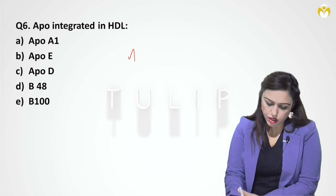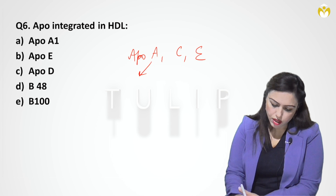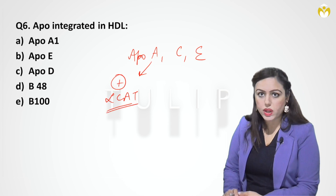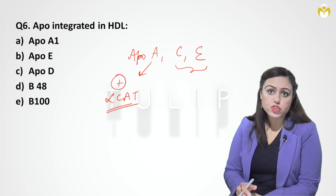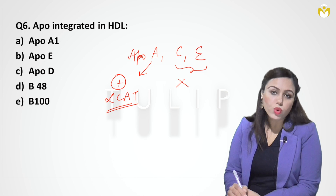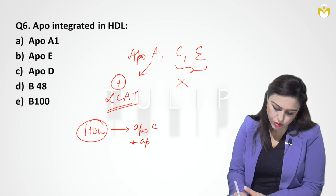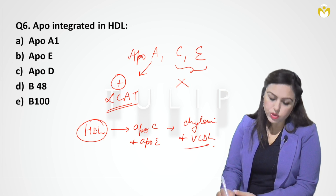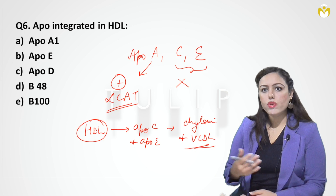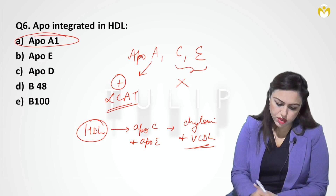The next question: which apolipoproteins are integrated in HDL? In HDL, Apo A, C, and E are incorporated. Apo A has a role in activating the enzyme LCAT (lecithin cholesterol acyltransferase). Apo C and E are incorporated during HDL synthesis but transferred to chylomicrons and VLDL, converting them to their remnants — chylomicron remnant and VLDL remnant. The answer: Apo A1 and Apo E are incorporated in HDL.